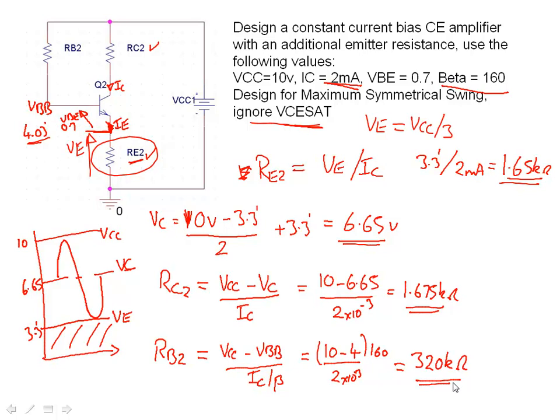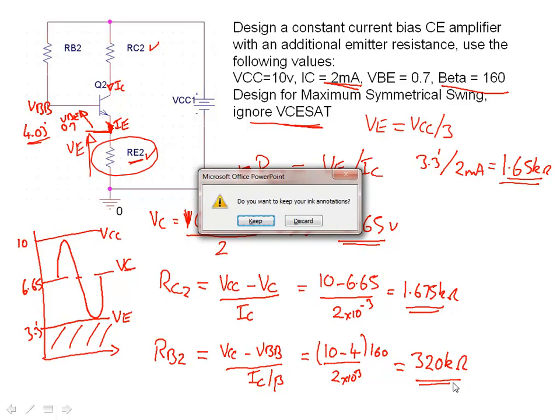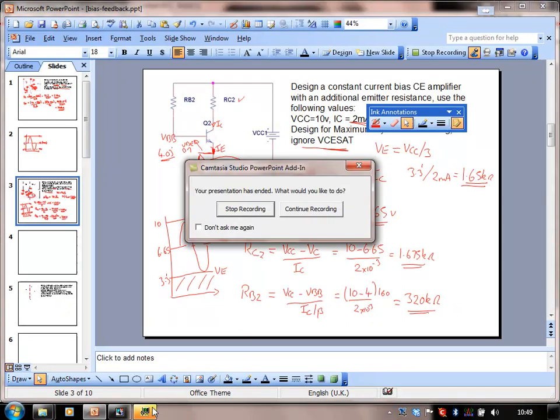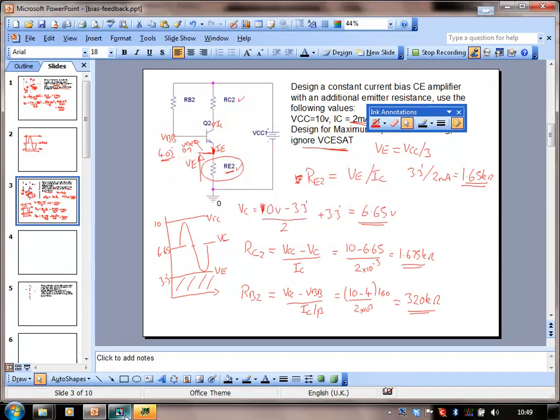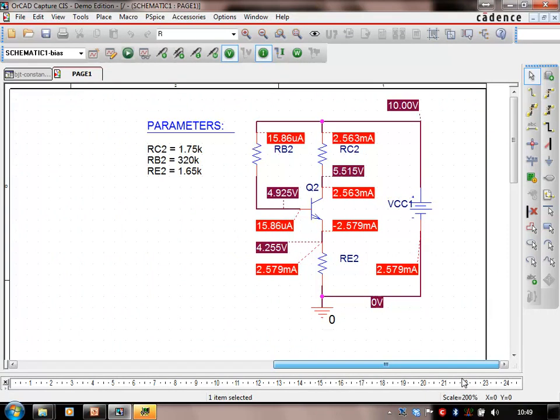So we've done this second bias system. Let's escape from our presentation. Let's go quickly to OrCAD. Let's scroll over here. I've already performed that design and as you can see we wanted it at 6 point something and we're a little bit further away from our design spec this time. RE2, look, it's not quite at 3.3 volts but it's close.